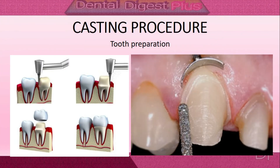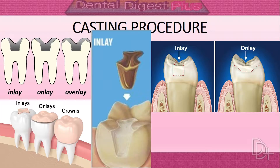The first clinical step is tooth preparation. Preparation of the tooth structure is done to receive the cast restoration. In case we need to prepare a crown, we reduce the amount of tooth structure to receive the crown. If we need to prepare an inlay or onlay, we prepare the cavity in the tooth to receive the inlay or onlay cast restoration.